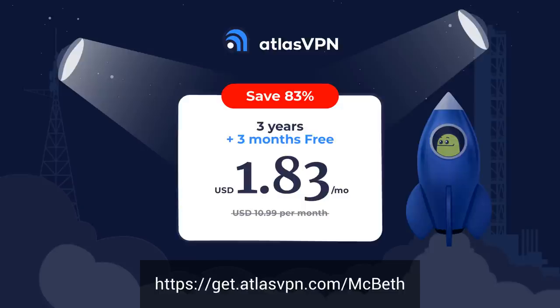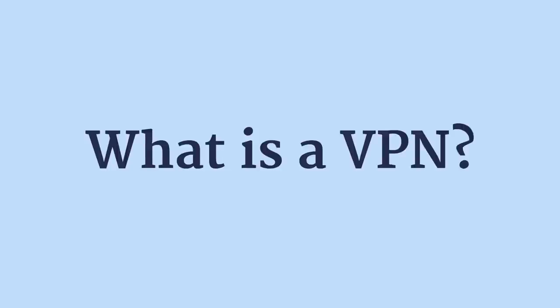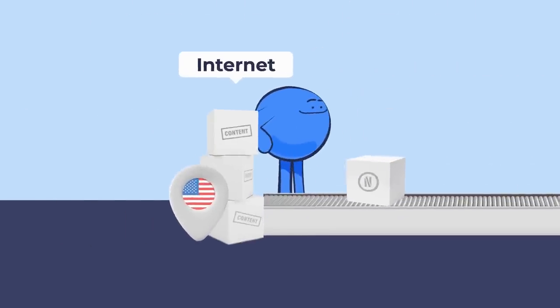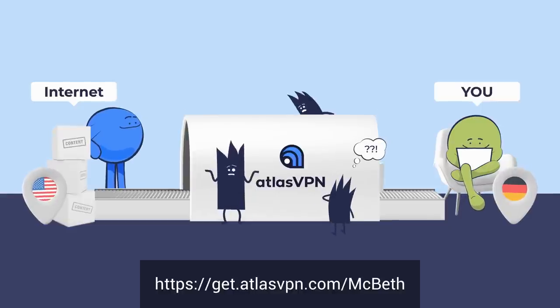Click the link in the description below and you can get Atlas VPN for only $1.83 a month for three years with a 30-day money-back guarantee. Those of you who watch my open-source intelligence videos know that the Russians do not like what I am doing, and I have gotten plenty of threats — I just got one today. So I use Atlas VPN to stay safe when I'm online debunking propaganda. Atlas VPN creates a secure tunnel from your computer through the public internet so that what you're looking at and where you are going is not viewable to governments, hackers, and people who want to do you harm. Click the link in the description below to get Atlas VPN for only $1.83 a month for three years with a 30-day money-back guarantee.